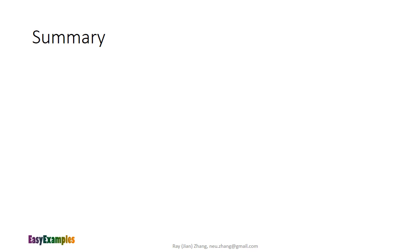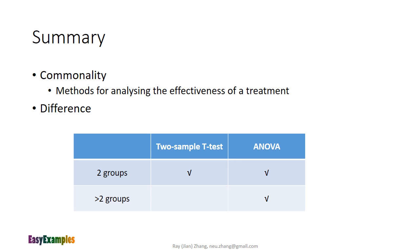At the end, we wrap up by summarizing the commonalities and the differences of the two methods. Both methods are designed for analyzing the effectiveness of a treatment. The difference is that ANOVA is applicable when there are any number of groups, while the two-sample t-test can only be used when there are two groups. When there are only two groups, because the two-sample t-test compares the averages of the two groups, it generates more intuitive results compared to ANOVA. So usually, when there are two groups, two-sample t-test is a better choice, and when there are more than two groups, ANOVA is a better choice. Thank you for watching Easy Examples. If you have any questions or suggestions, please leave your comments or contact me from the email in the bottom of the slide.